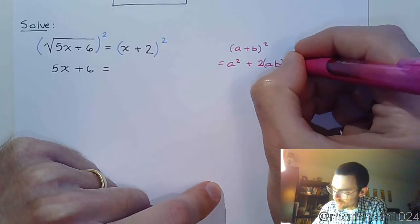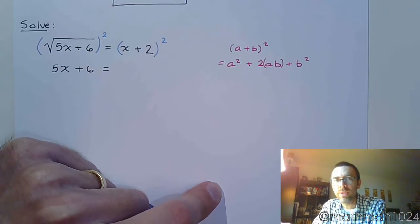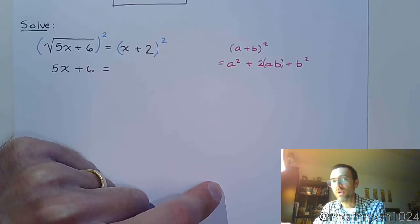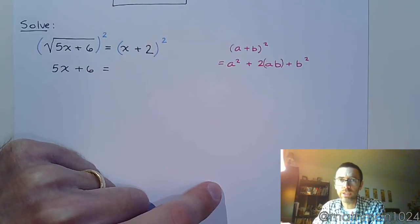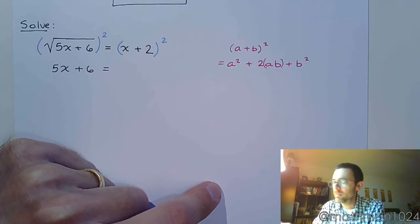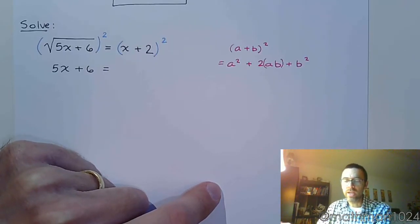And sometimes it's easier to look at it like this, put parentheses around the a and the b. So if you could multiply and get the product for a and b, then you just double it, and that's your middle term.